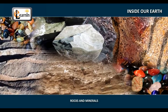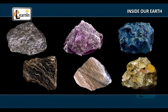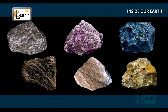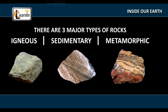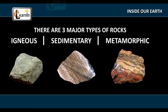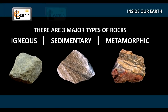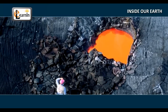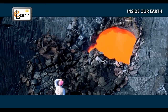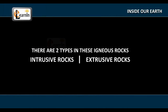Rocks and Minerals. A natural mass of mineral matter that constitutes the Earth's crust consists of rocks of different colors, sizes and textures. There are three major types of rocks: igneous, sedimentary and metamorphic. The formation of igneous rocks, or primary rocks as they are also called, occurs when the molten magma cools and becomes solid. There are two types of igneous rocks.